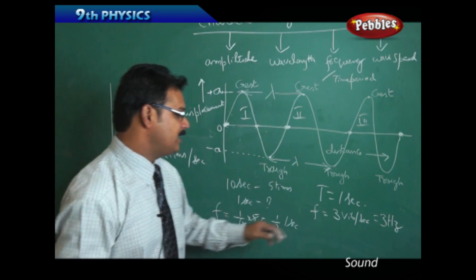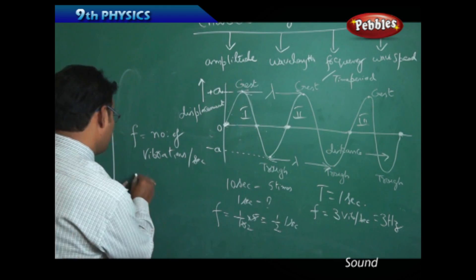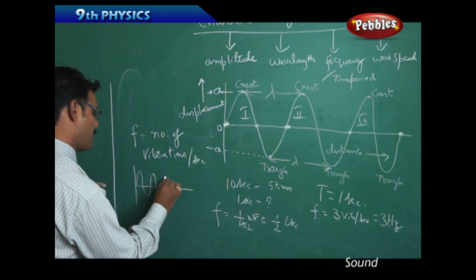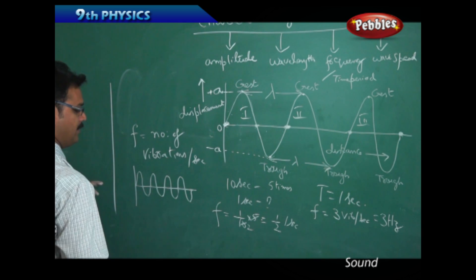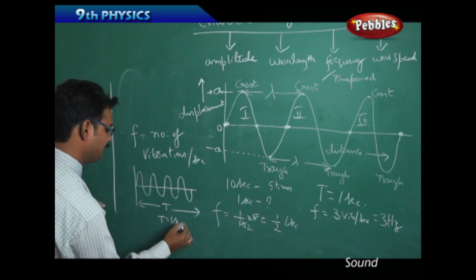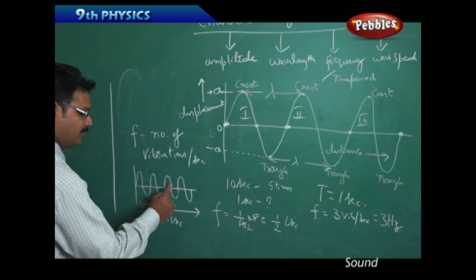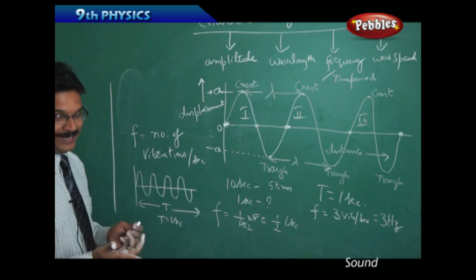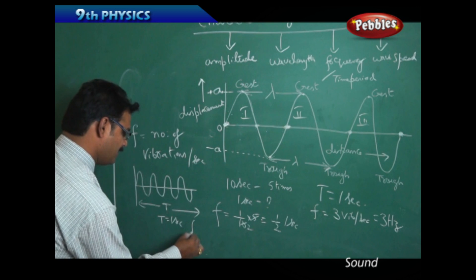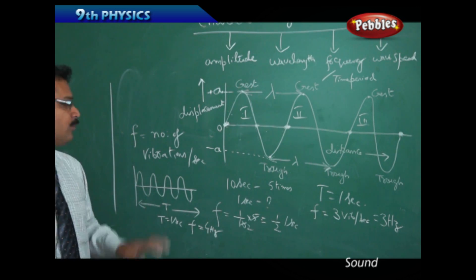So instead of saying three vibrations per second, you simply say three Hertz. Now let us draw another diagram. This is also done for t = 1 second. Count the waves: one, two, three, four — or count the peaks: one, two, three, four. So four peaks means four waves, and hence the frequency equals four Hertz.